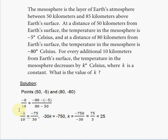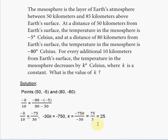Cross-multiplying — the product of the means equals the product of the extremes — gives minus 30k equals minus 75 times 10, which is negative 750. Dividing both sides by negative 30, the negatives cancel and the zeros reduce, leaving 75 divided by 3, which equals 25.